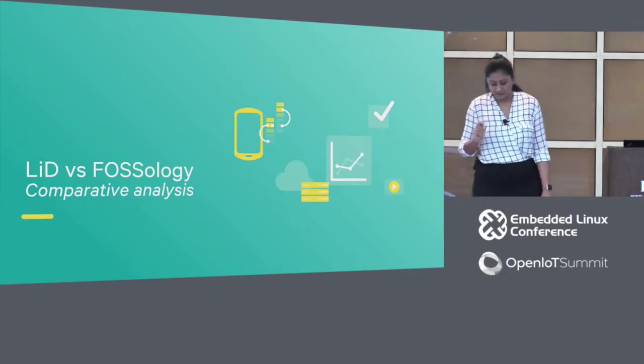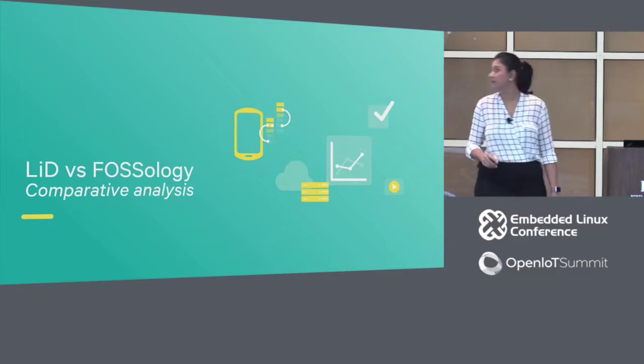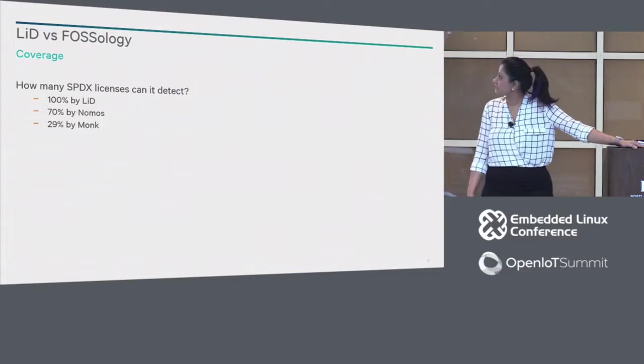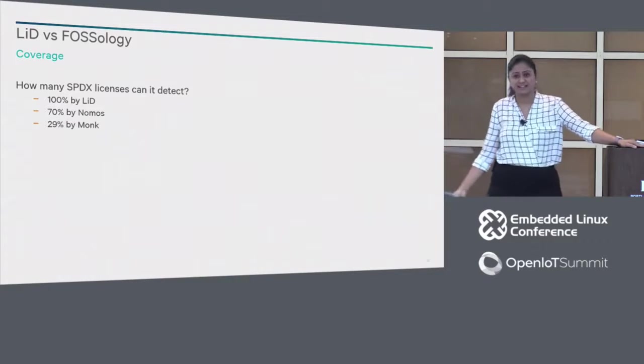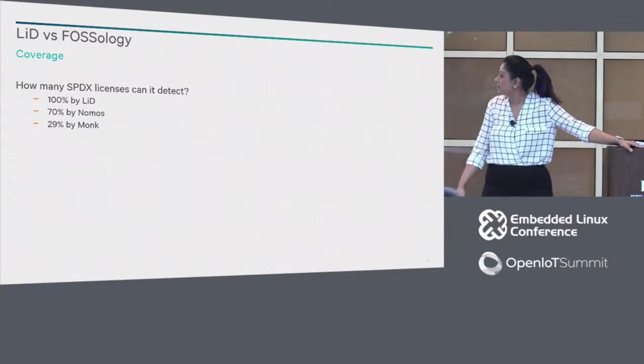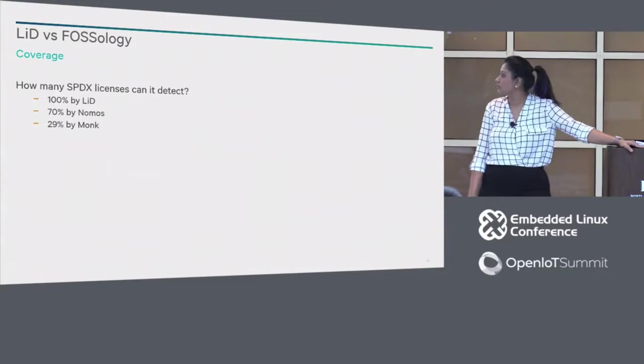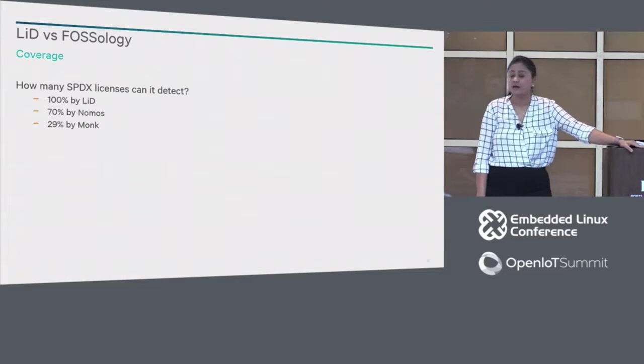Time for some comparative analysis. As I was talking about the real-world evaluation data set containing mixed code from Qualcomm proprietary with some standard SPDX licenses, we tried to see how these tools compare. The first criteria was coverage: how many SPDX licenses does each tool detect? LID is built on the SPDX license templates, so it catches 100% of the licenses. At the time of evaluation Nomos caught 70% and Monk caught about 29%.